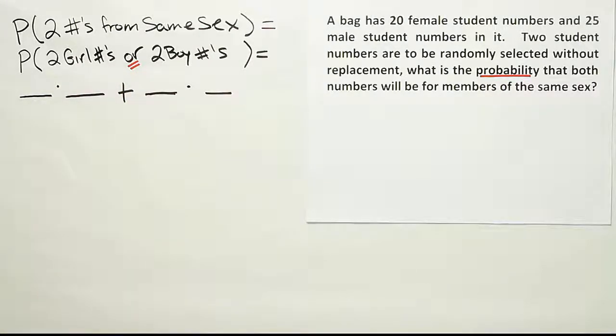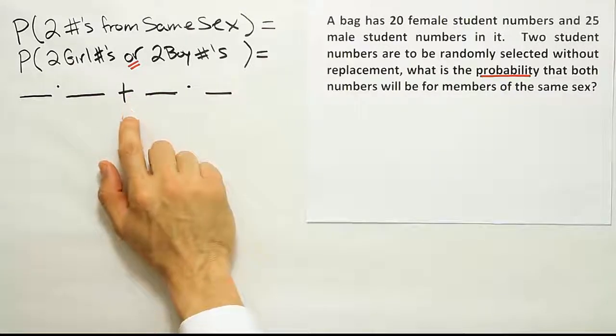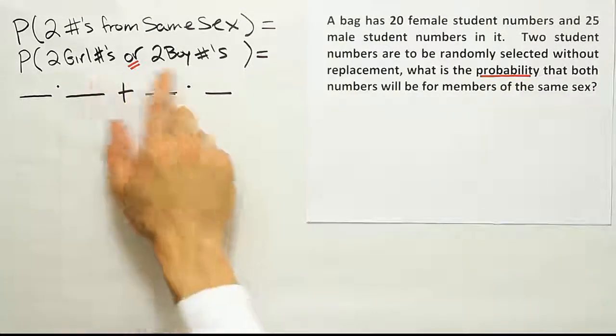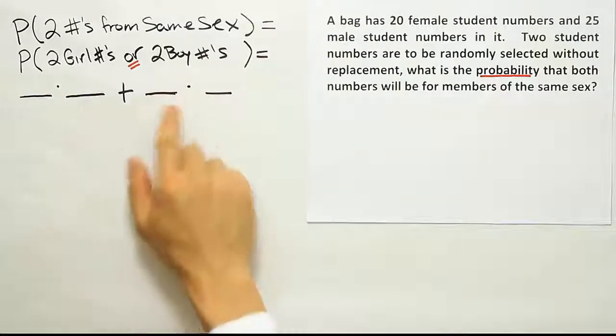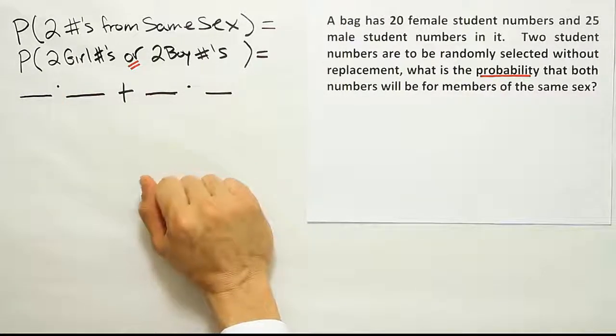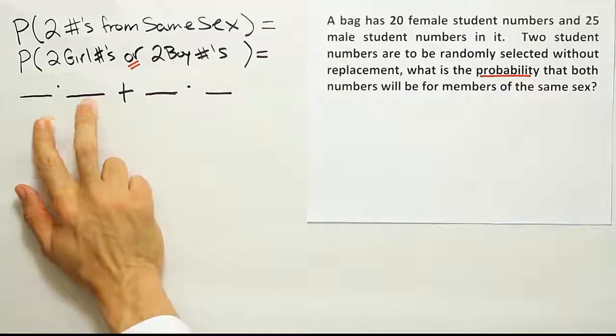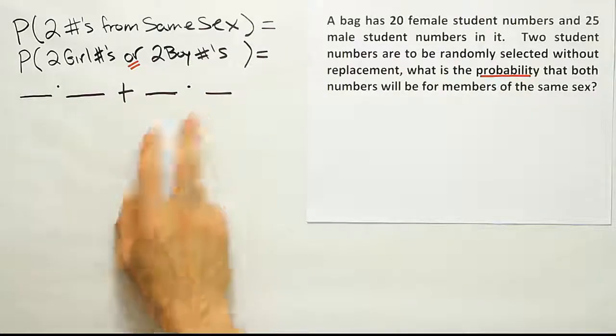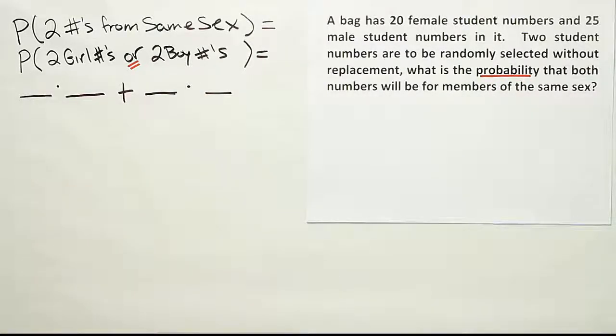Now, the important thing to mention about this problem is that even though we have the word or and we're using the addition rule, these events are mutually exclusive. You either get two girl numbers or two boy numbers. There's no way you can do both things at the same time because you're only taking two numbers. So either they're both from girls or both from boys. You can't have both two girl numbers and two boy numbers occur at the same selection of two tickets or two numbers, right?